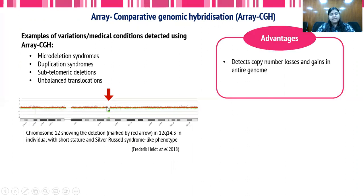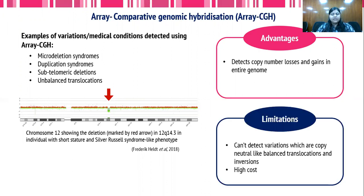The advantages of array CGH are that it detects copy number losses and gains across the entire genome. Variations exist where we can either detect changes in the entire genome or make it targeted. However, a limitation is that array CGH cannot detect copy-neutral variations like balanced translocations and inversions, as there is no change in copy number at those sites. It is also of relatively higher cost.